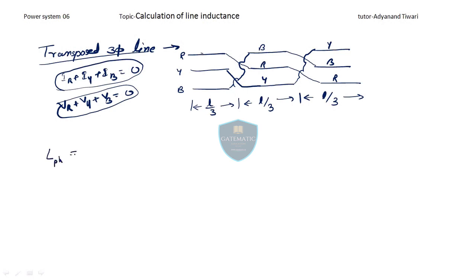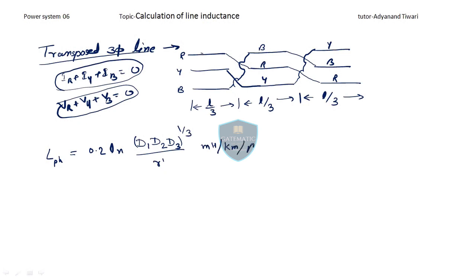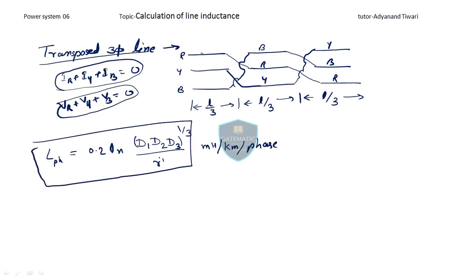For a three-phase transposed line, the inductance per phase is: L_phase = 0.2 × ln(D1·D2·D3)^(1/3) / R' mH per km per phase, where D1, D2, D3 are the distances between the conductor pairs (R-Y, Y-B, R-B) and R' is the GMR. The cube root is used because D1·D2·D3 gives units of meter³, and taking the 1/3 power reduces it to meters.